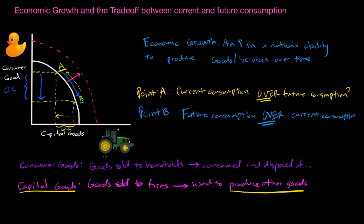If society chooses to allocate more resources towards capital goods today, society is choosing future consumption over current consumption. By allocating more of its scarce resources towards capital goods — tools, equipment, and technology — it gives up current consumption of consumer goods. The benefit of producing more capital goods today is likely to be higher rates of economic growth in the future, because capital goods are used to produce other goods. Capital is a factor of production; consumer goods are not. Consumer goods are consumed and thrown away, while capital goods are used in factories, fields, and mines to produce the goods and services society benefits from.